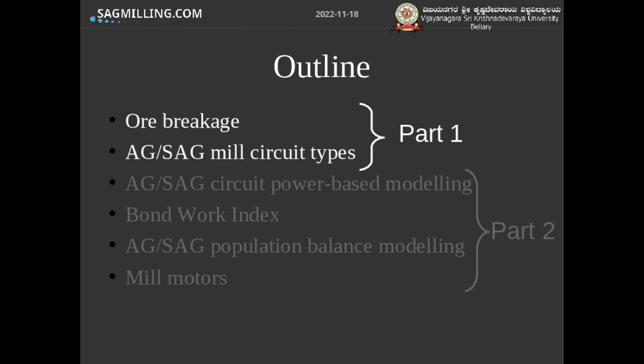We'll then talk about some of the autogenous and semi-autogenous grinding circuit types, the different ways you can arrange these grinding mills. I'll talk about the design versus optimization of these circuits, ball mill power-based modeling, as well as AG-SAG population balance modeling, which is a different type of modeling usually used for circuit optimization. Then I'll cover operating a SAG or autogenous circuit and finish with a summary of mill motors.